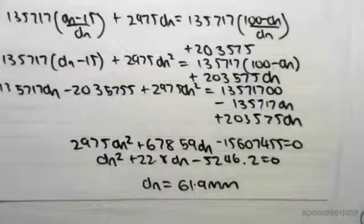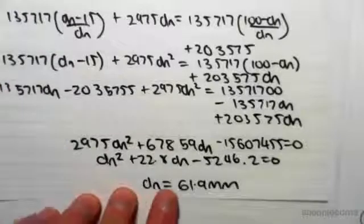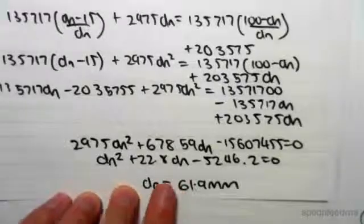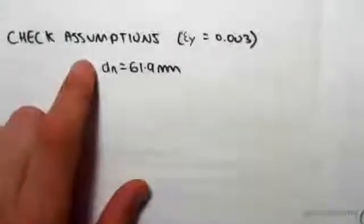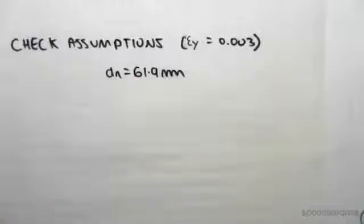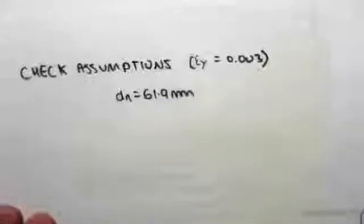Hey guys, I'm continuing straight on from the previous video. So we've now found our depth to our nuclear axis is 61.9 millimeters. We now need to check our assumptions in the beginning. So we need to come back to looking at the strains.